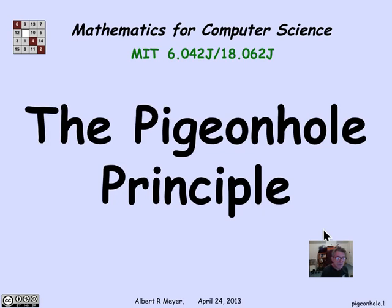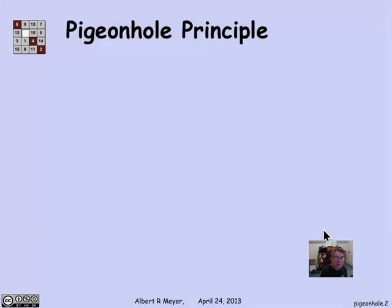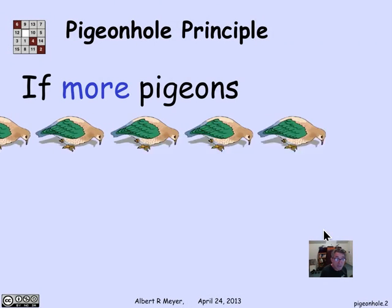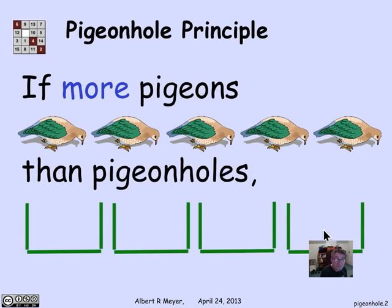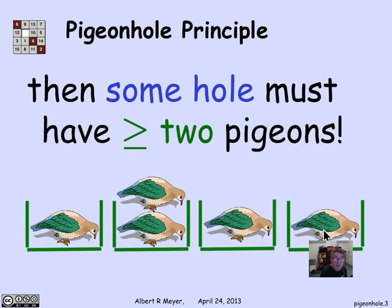The pigeonhole principle is a counting principle that's so obvious that you may not have noticed that you're using it. In simple form, it says that if there are more pigeons than pigeonholes, then you have to have at least two pigeons in the same hole.